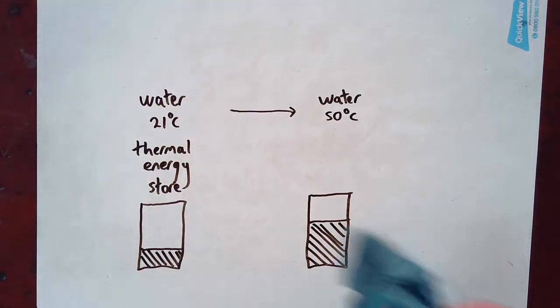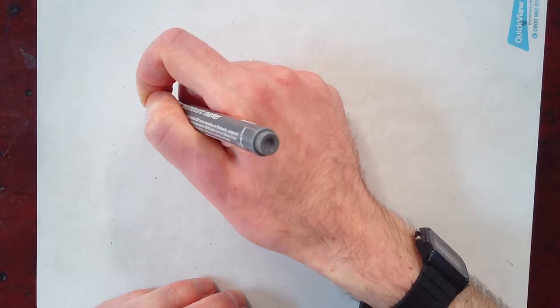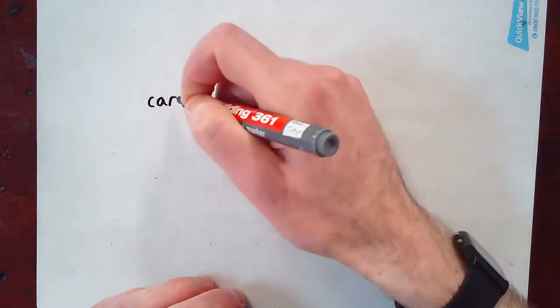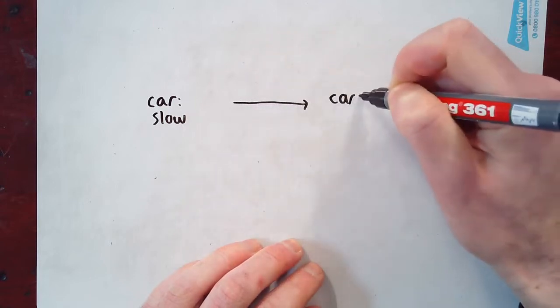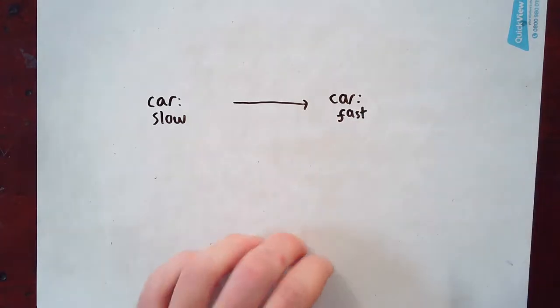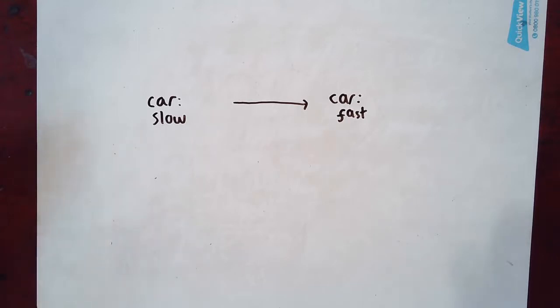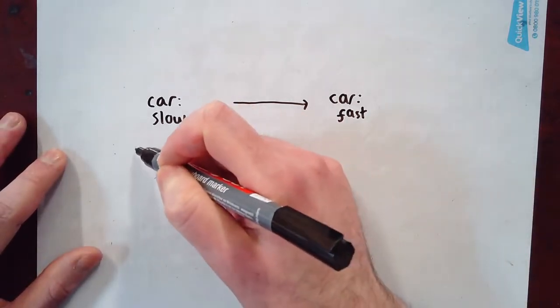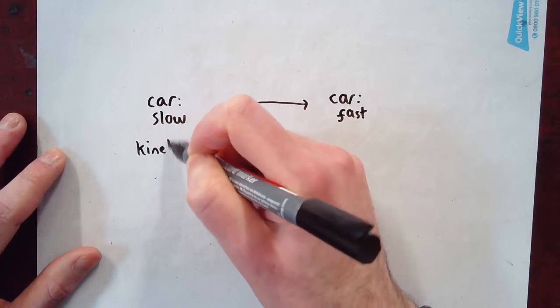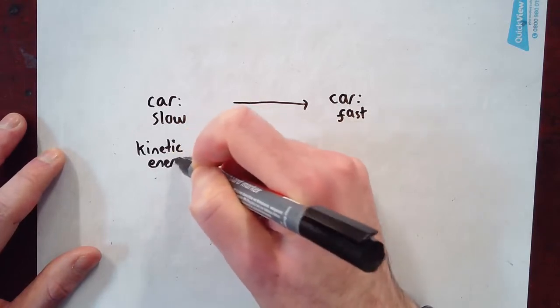The next energy store starts with an object that's moving. Let's say I have a car and it's moving slowly. Whoever's driving the car puts their foot on the pedal and the car is now going fast. So obviously energy's gone into the car somehow — it's not gone into the thermal energy store because I'm not really interested in the temperature change of the car, I'm interested in the fact that it started moving more quickly. So for this one, we talk about the kinetic energy store.